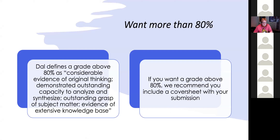There's a common misconception that doing everything expected gets you 100. In a university grading scale, DAL defines a grade greater than 80% as requiring considerable evidence of original thinking, demonstrated capacity to analyze and synthesize, outstanding grasp of the subject matter, and evidence of an extensive knowledge base. To get above 80, I want that from you. I recommend putting a cover sheet before your assignment so we can see where you went the extra mile and consider giving you bonus points. I give extremely clear rubrics that state how you can go above and beyond expectations.